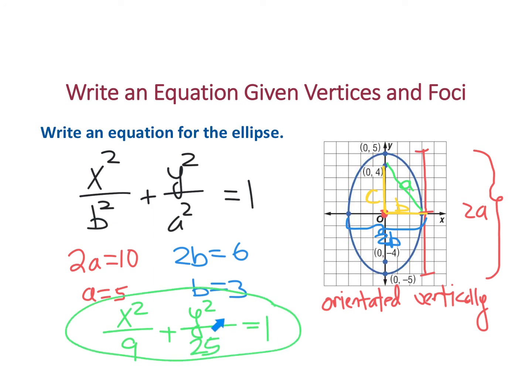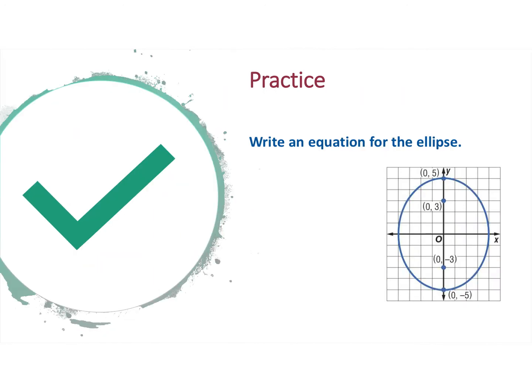Now again, if you want, you could switch around x and y. So I think the answer in your book will be y squared over 25 plus x squared over 9 equals 1, because they like the bigger number first. I always like going x squared and y squared. That's a personal preference.